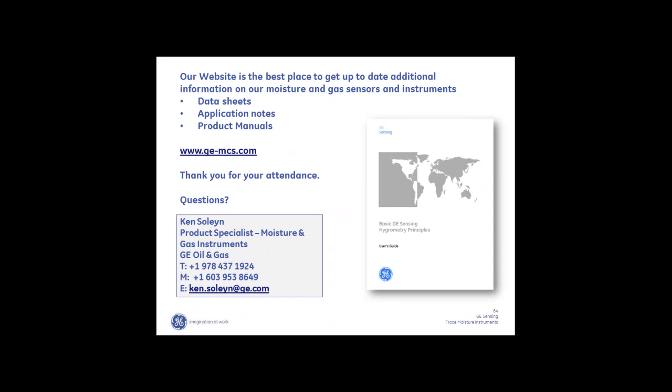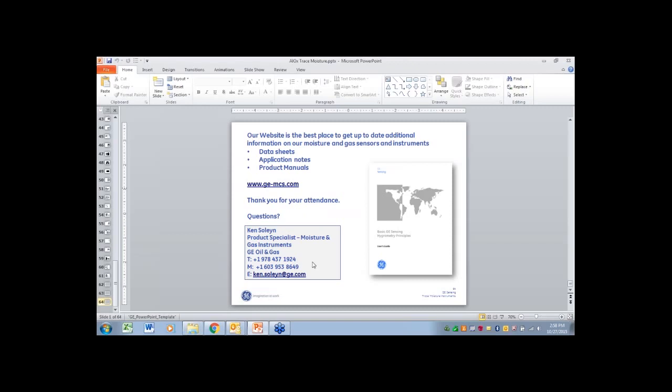One of the best ways to get information on our products and applications is to go to our website. I encourage you to download our Basic Hygrometry Principles guidebook — it has a lot of good information. My contact information is there if you want to get a hold of me. We went through quite a bit quickly, but we'd like to open it up for questions. Thank you, Ken — that was very informative. We do have a couple of questions; if anything else comes to mind, please feel free to type them in.